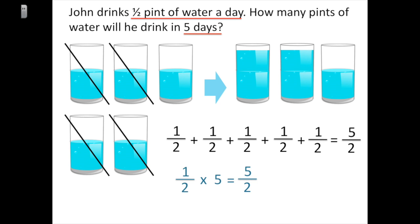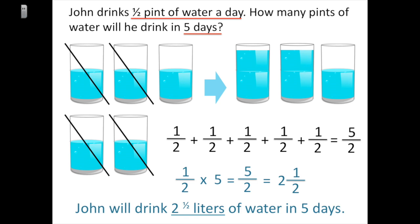We have to change five halves into a mixed number, so it becomes two and a half. John will drink two and a half pints of water in five days. Now we're going to take a look at a couple of other problems to really understand how we multiply a fraction times a whole number.